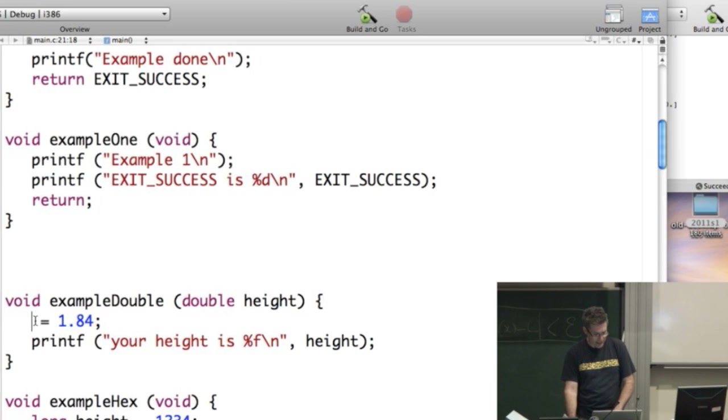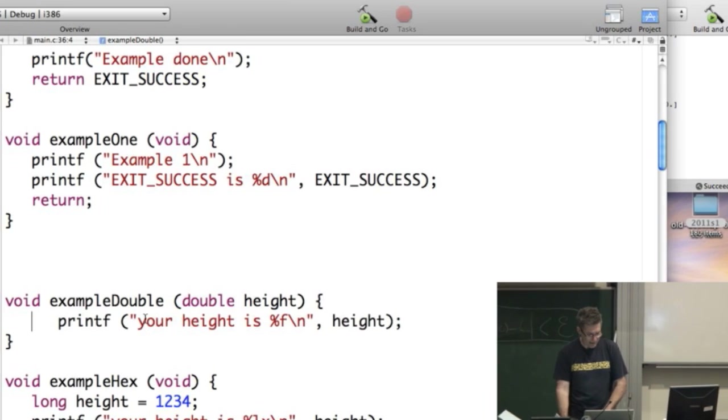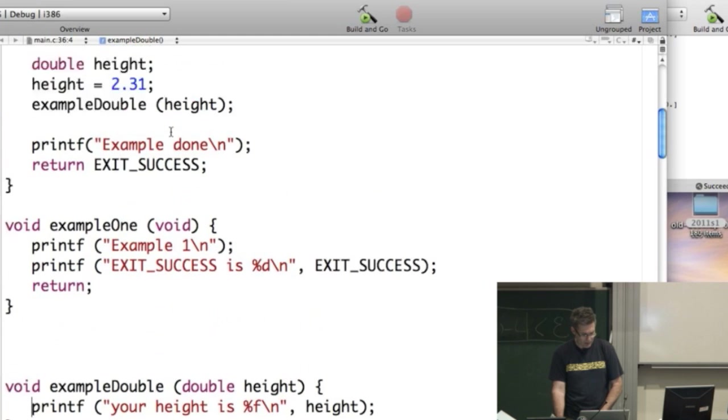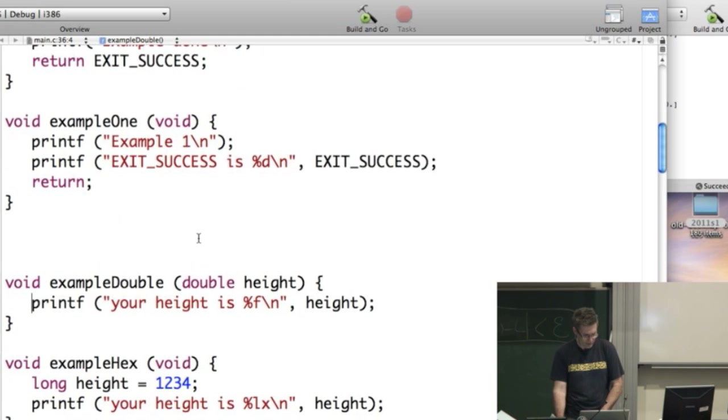So, example double now gets passed in a height. The other functions aren't being called, but that's okay. They can still be there with no effect. That's right, the program won't mind. And it's going to call it, pass in a height, and the height's going to be 2.31 in this case, pass it into the function, and then the function's going to print that out. Let's check that that works.